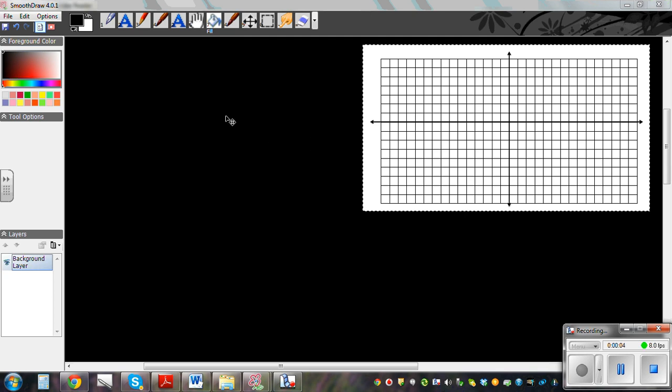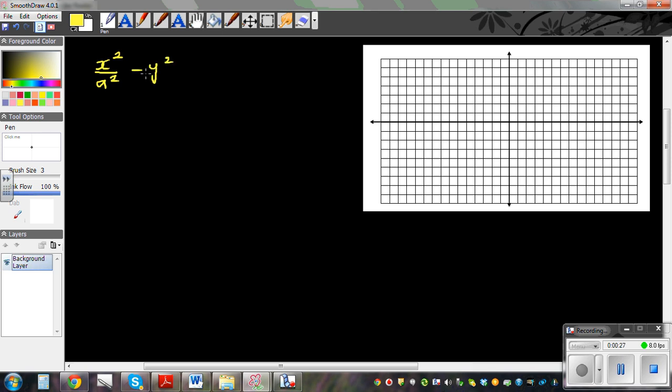In this video I want to talk about a hyperbola. Let me write the standard form of a hyperbola. When you say standard form, it is centered at 0,0. The standard form of a hyperbola is x squared over a squared minus y squared over b squared is equal to 1. Here is the center, C for center is 0,0.